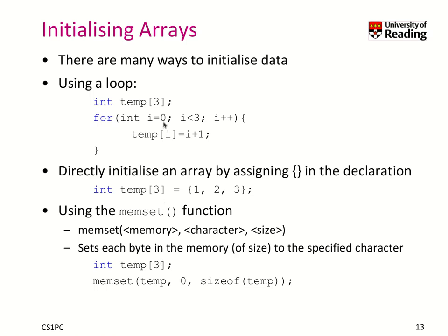How do we initialize an array? There are several ways. One easy way is using a loop. Here we create an array of three elements of type integer. We create a loop that goes from 0 up to 2 and then assign the array at position i to be some value, for example i plus 1.